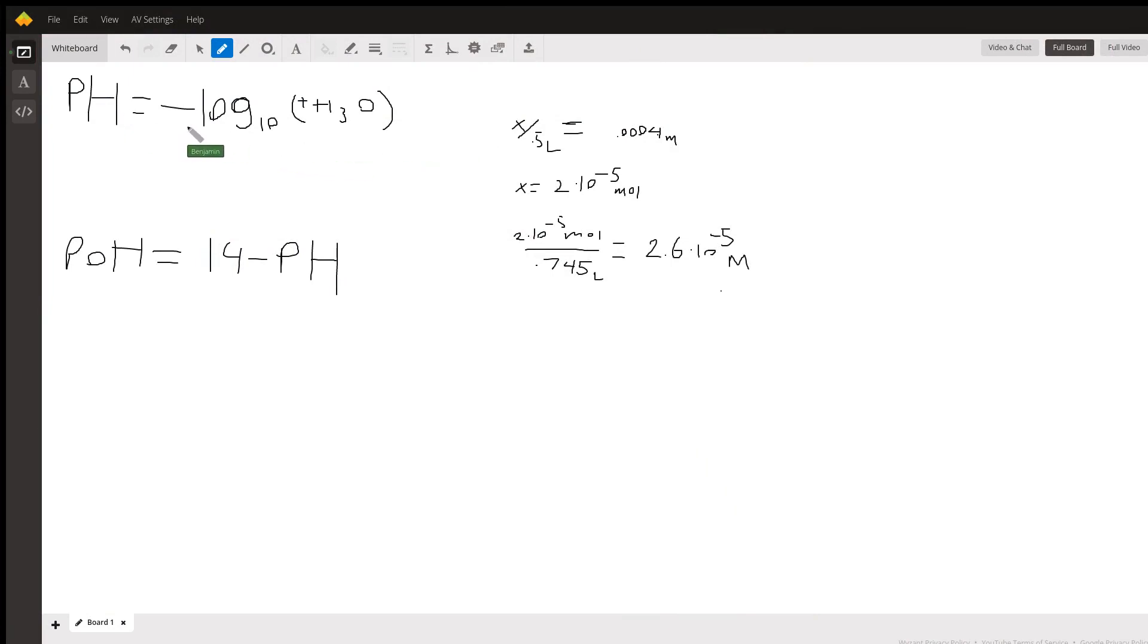pH is equal to the negative log base 10 of the H3O ions, and we know this is hydrofluoric acid that we're dealing with here, so it's going to dissociate one proton, and we're going to have an exact one-to-one when you have that dissociation of H3O to your concentration of hydrofluoric acid, H3O to HF.